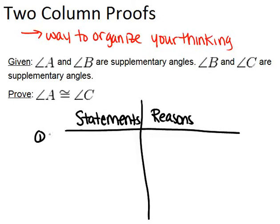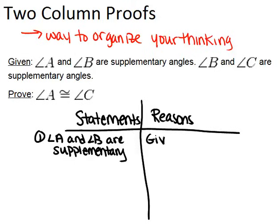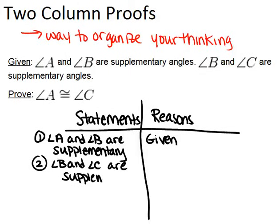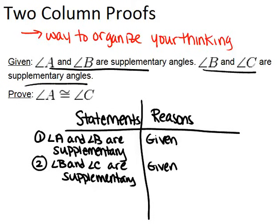We start with our givens: angle A and angle B are supplementary, and the reason we know that is because it was given. The second thing we know is that angle B and angle C are also supplementary — also given. Notice we've started with the given information in the problem, and each item is numbered to keep it organized in the table.